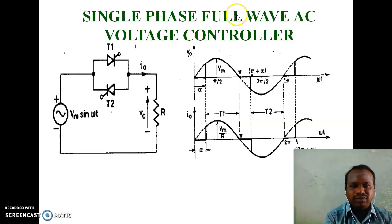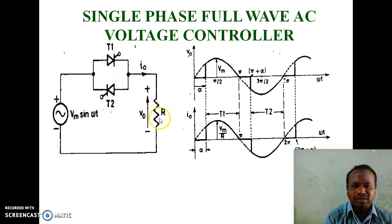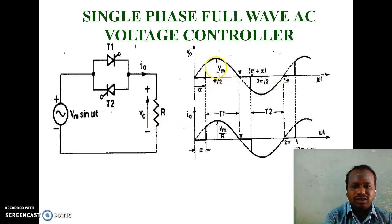Single-phase full-wave AC voltage controller: in a full-wave AC voltage controller, both devices are controlled devices. These two controlled devices are connected in anti-parallel and connected in series with a load resistance. Here, both half-cycles are controlled — the positive half-cycle is controlled by T1 and the negative half-cycle is controlled by T2.